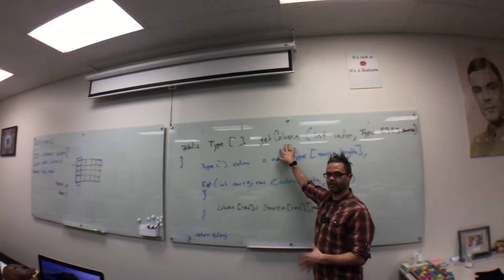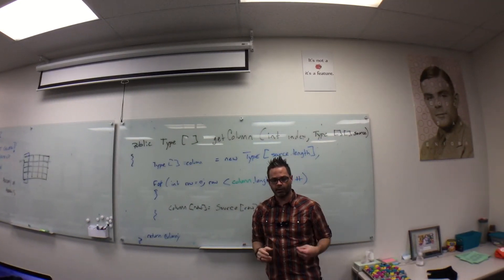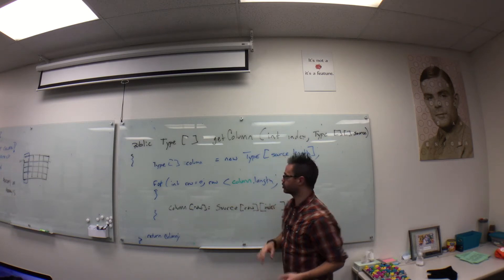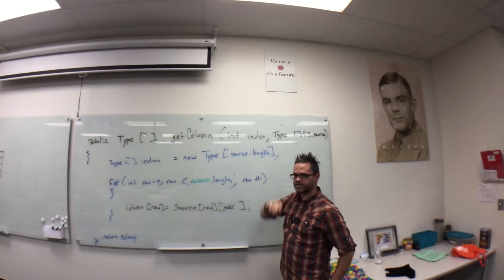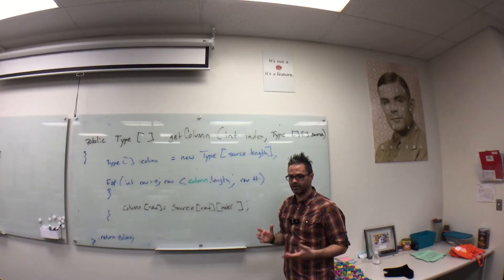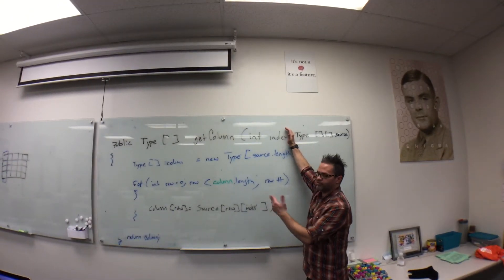I have the extremely creative name of getColumn, because we're extracting out a column's worth of information. When we're talking about extracting a column's worth of information, we need to know which column we're working with. So our first parameter is index. If this is only internal to an existing thing that only has to retrieve one value, that can be the end of our method signature.